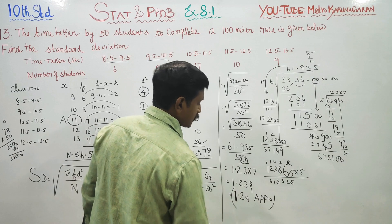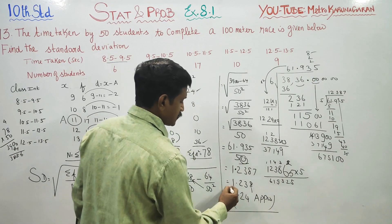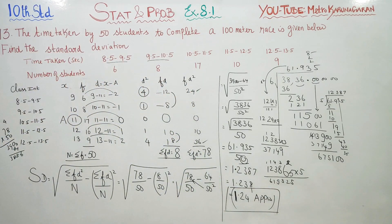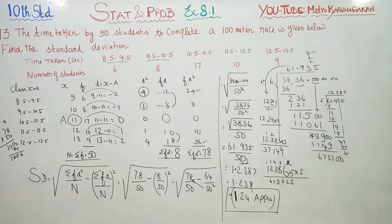This is your square root result. The approximate answer is 1.24. Standard deviation: therefore, the time taken by 50 students to complete a 100 meter race — the standard deviation of the timings — is 1.24. Thank you.